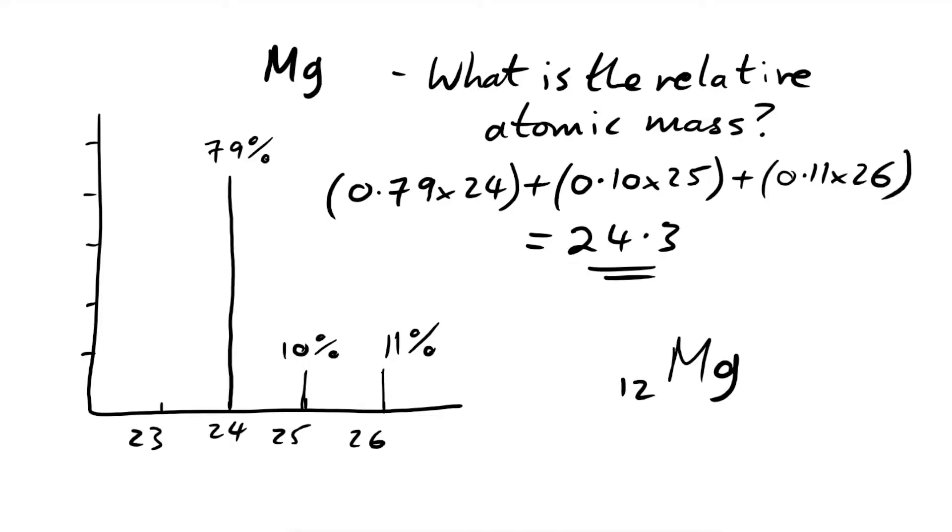So magnesium is always 12, atomic number of 12, because it has 12 protons. But actually the mass number, relative atomic mass, should be 24.3 if we want to be accurate, because that's what it averages out to when we take into account the relative abundance of the different isotopes.